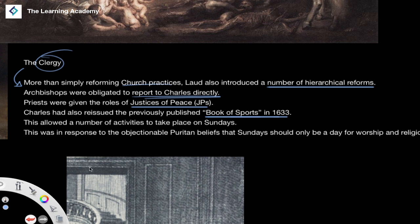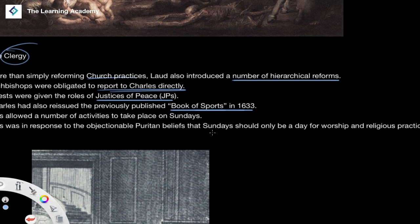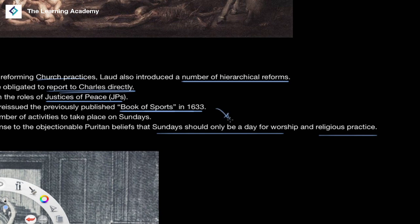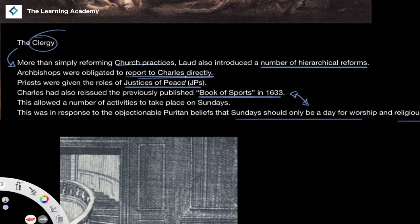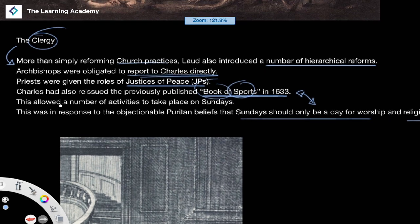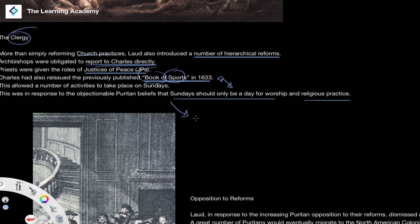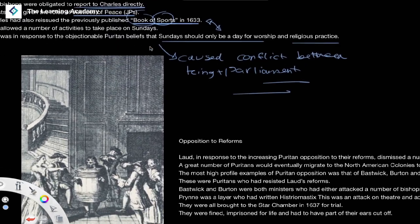The Book of Sports allowed a number of activities to take place on the Sabbath — on Sundays. In response to Puritan beliefs that Sunday should only be a day of worship and religious practice, you can understand that this caused conflict between the new church practices issued under Laud, the different practices Charles supported with the Book of Sports, and Puritan beliefs. You can see how this caused considerable conflict between the King and Parliament.